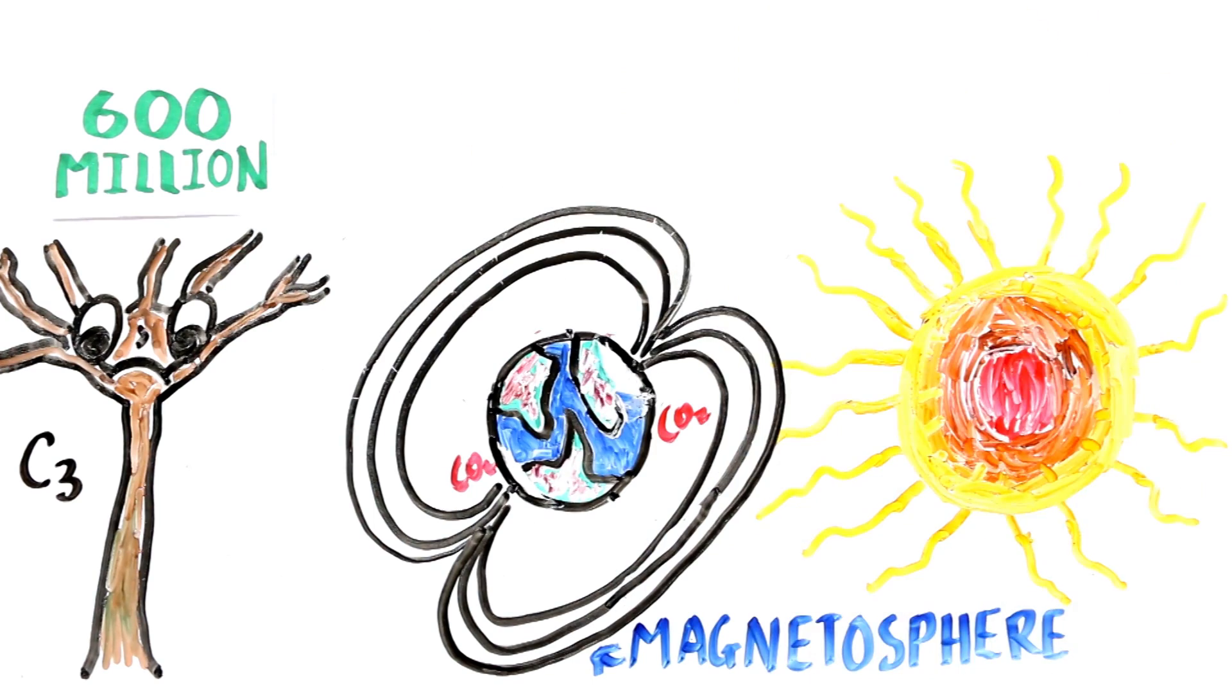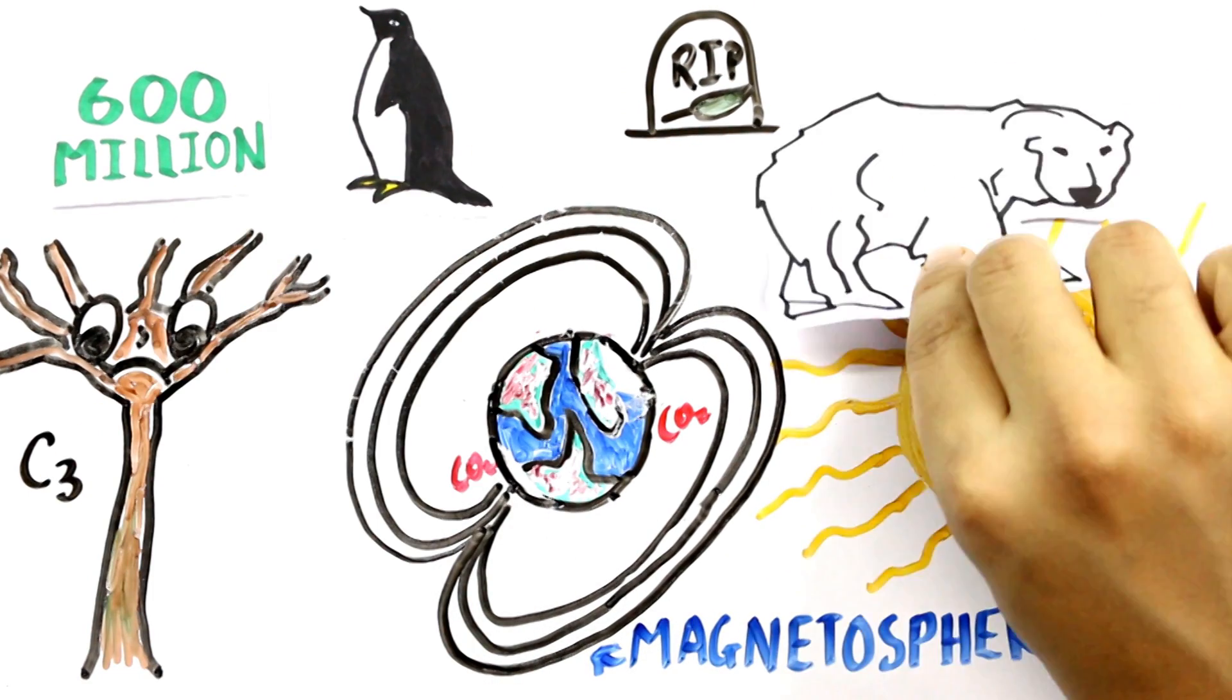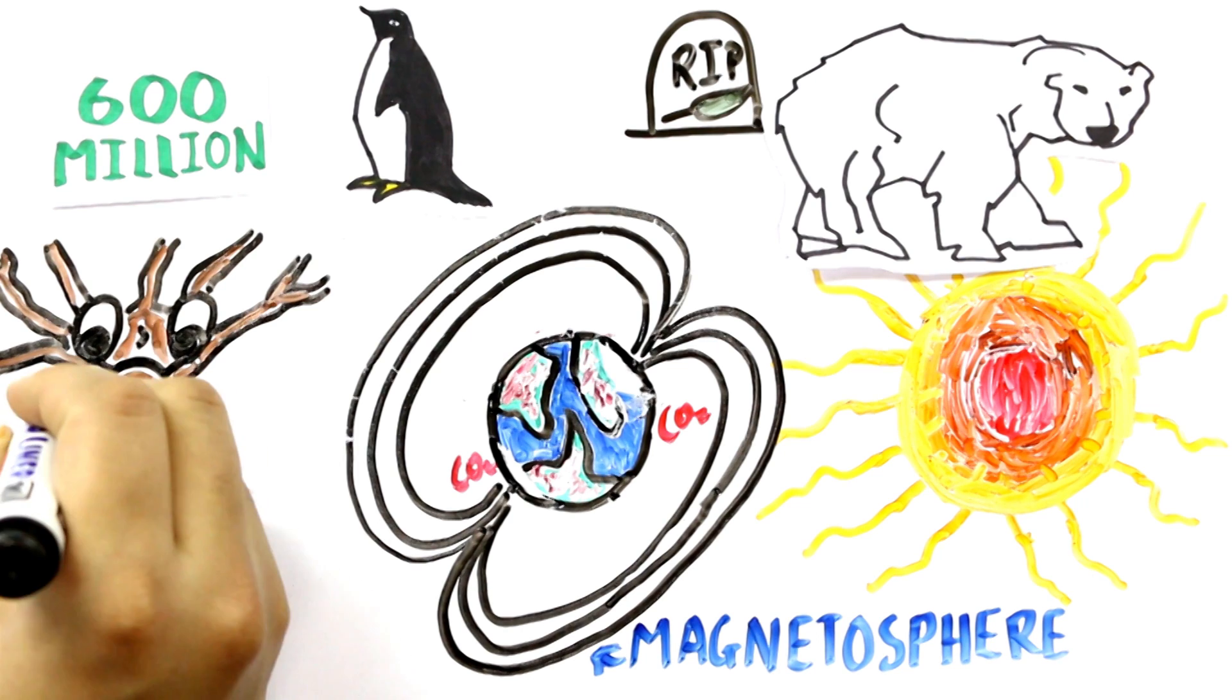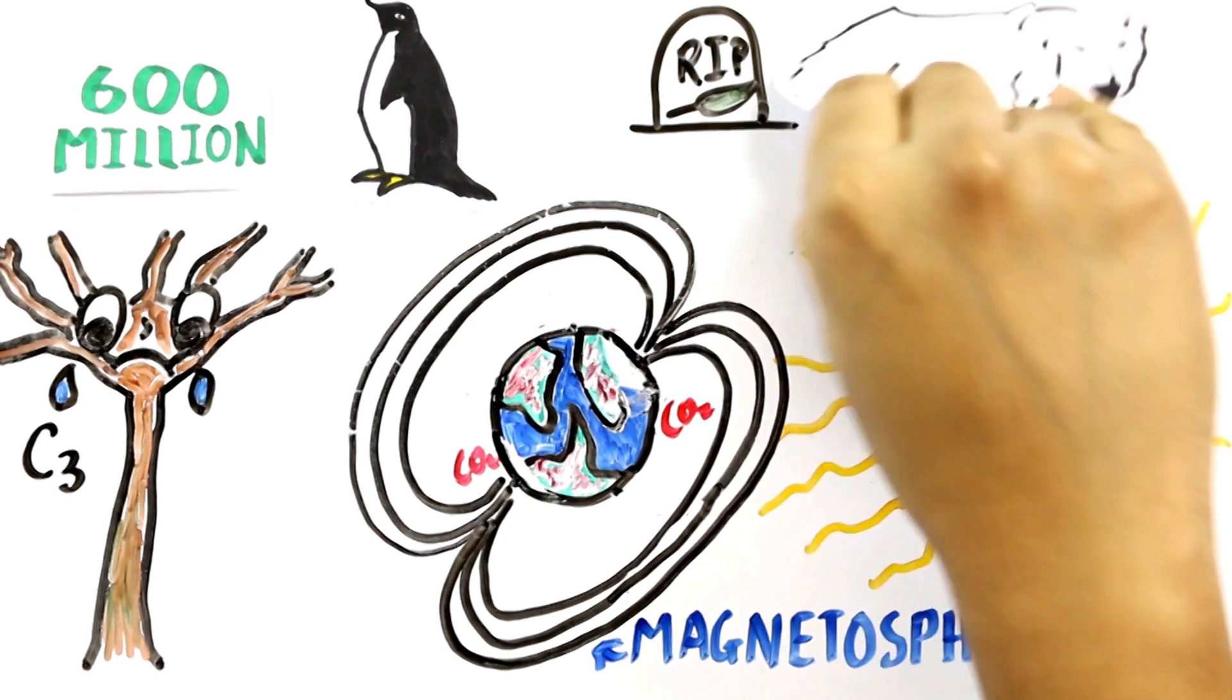However, the long-term trend is for plant life to die off altogether. The extinction of plants will be the demise of almost all animal life, since plants are the base of the food chain on Earth.